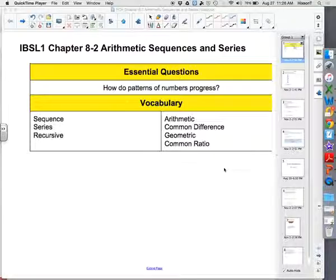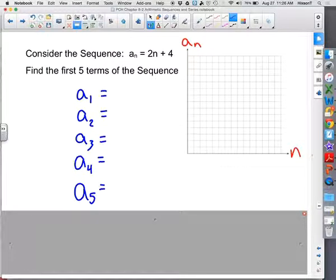Now, let's start out by looking at this sequence. We have the definition of a sequence, a sub n equals 2n plus 4. And we looked at how to find terms of the sequence, so go ahead and take a moment, find the first five terms of this sequence. You don't have to worry about graphing at this moment, but find the first five terms.